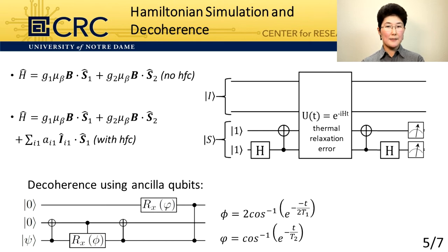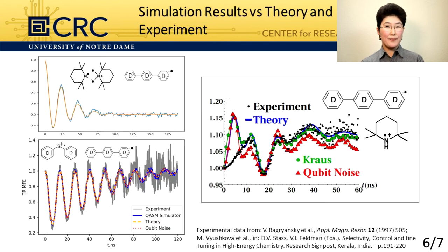Because radical spins normally undergo thermal relaxation, we had to add corresponding decoherence channels. We did so by using either ancilla qubits and additional circuits, or both real or simulated qubit noise. And we were able to achieve good agreement with both theory and experiment.